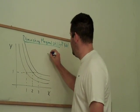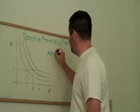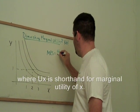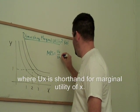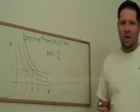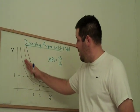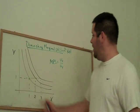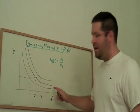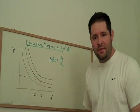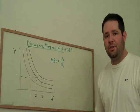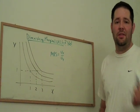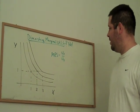As you may remember, marginal rate of substitution equals the ratio of marginal utilities. Notice that what we have here on our indifference curve map is indifference curves such that our marginal rate of substitution is diminishing. But I didn't say anything about the labels on these indifference curves.